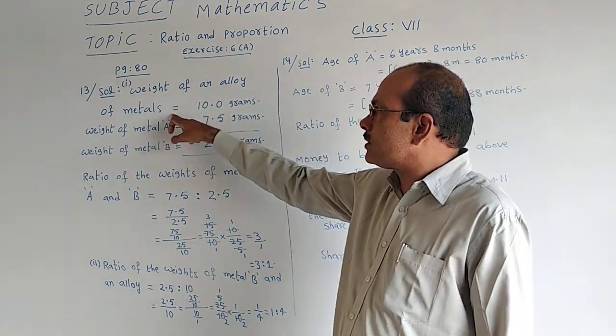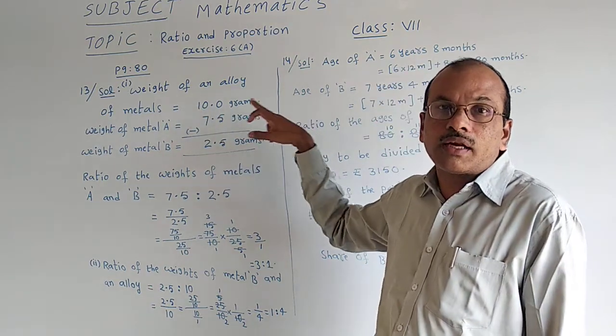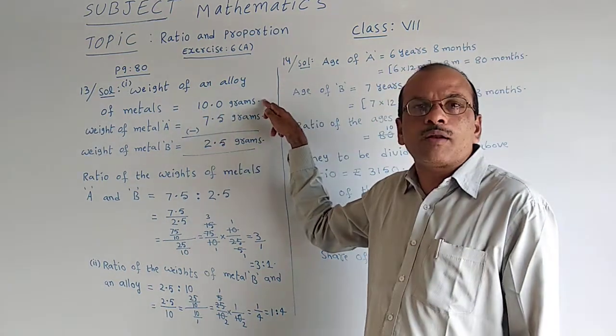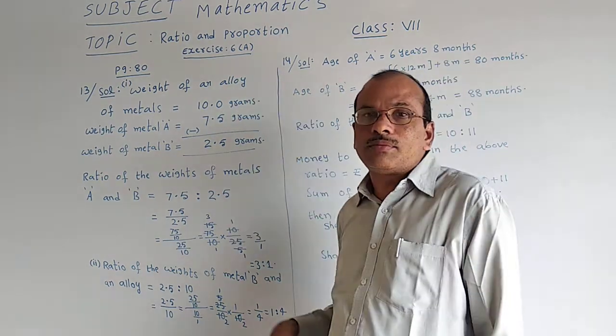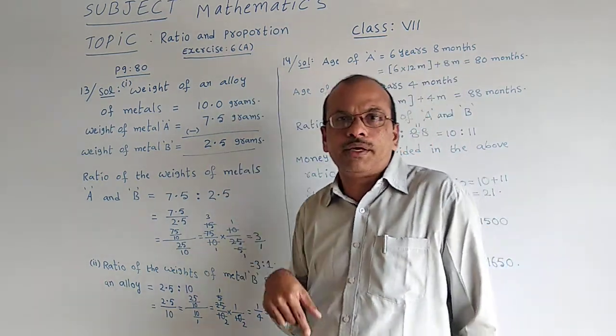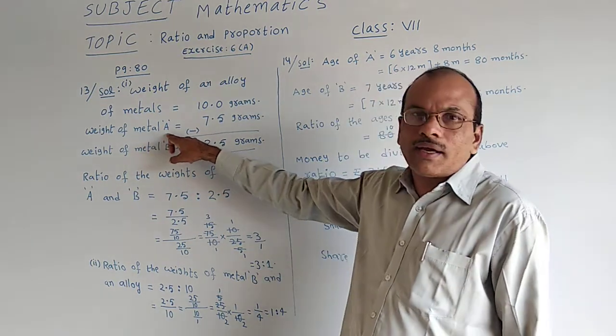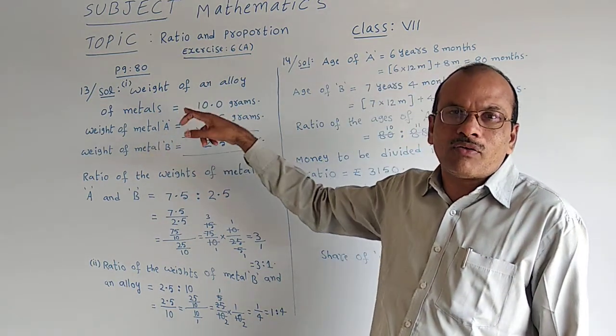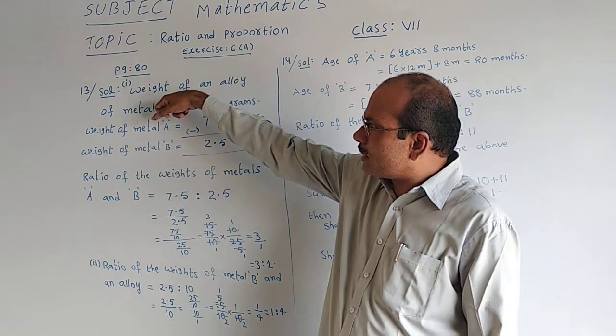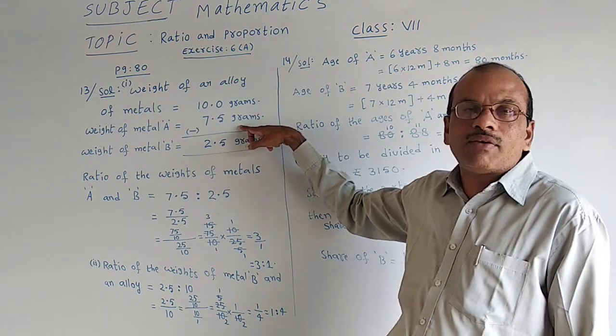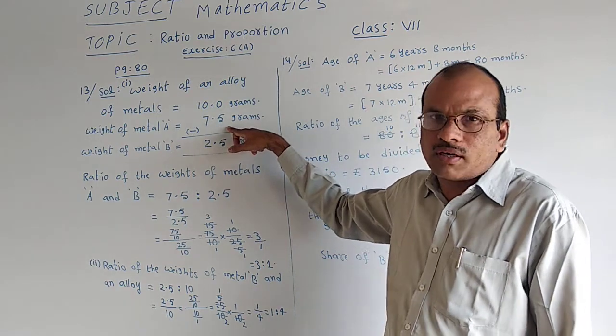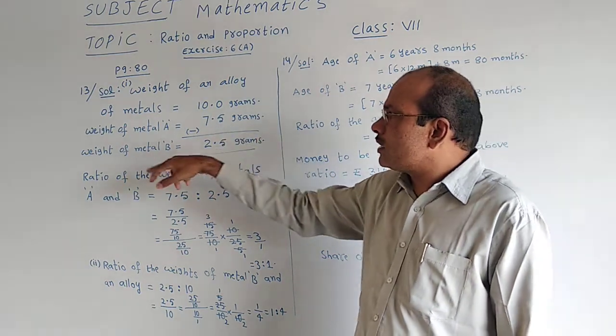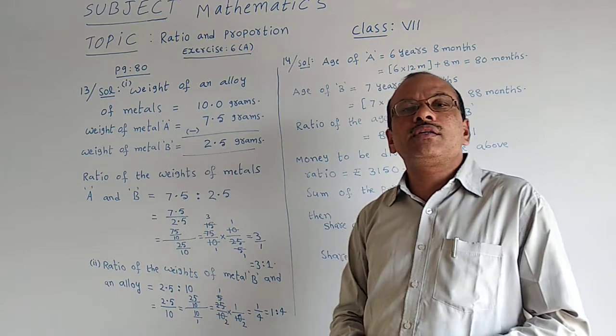Weight of an alloy of metals: 10 grams, which can be written as 10.0 grams. In that, two metals are there - metal A and metal B. Weight of metal A is given as 7.5 grams. Then they said to find weight of metal B.